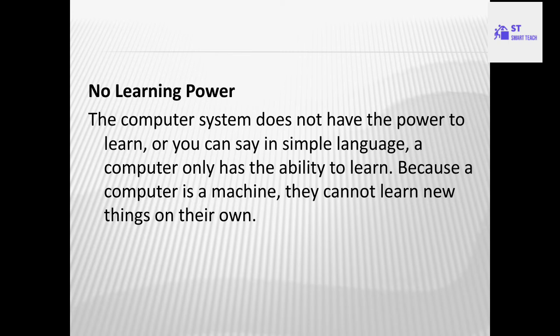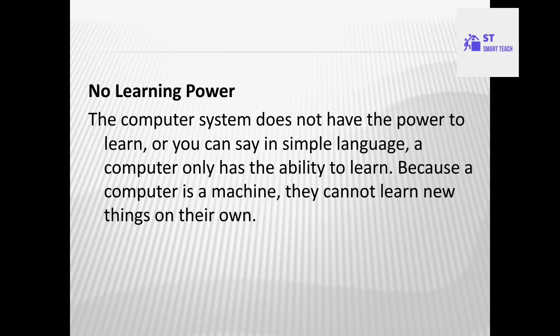The next disadvantage is no learning power. The computer system does not have the power to learn. A computer only has a fixed ability — because it is a machine, it cannot learn new things on its own. If we want to perform any number of tasks on a computer, we need to give instructions each time, because the computer does not have learning power and cannot remember those things. The instructions and operations need to be given as input every time.